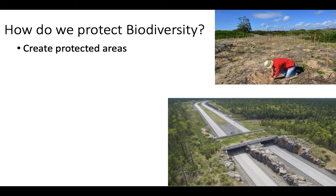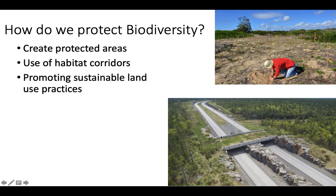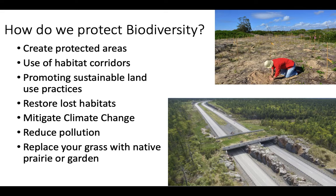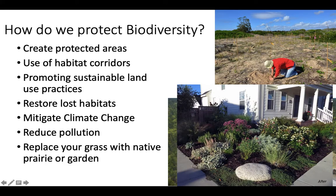So what can we do to protect biodiversity? We can create and manage protected habitat areas, use habitat corridors to connect fragmented habitats, and promote sustainable land-use practices we discussed in Unit 5. We can restore lost habitats — as simple as planting trees or working with conservation groups. Mitigating climate change and reducing pollution will also help preserve biodiversity. And on an individual scale, besides volunteering for a local restoration group, you can replace the grass on your lawn with native plants or a garden — something that will help increase local biodiversity and support more biodiverse pollinators as well.